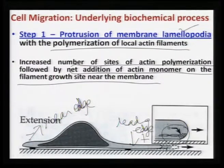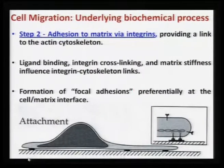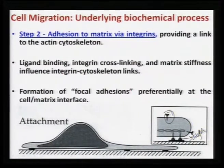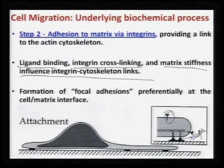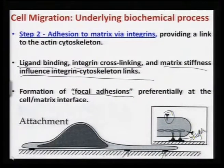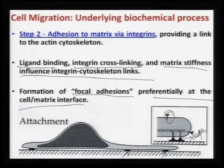For a cell, this side is considered the minus end and this is the leading edge, while the other side is the rear edge. Step 2 is adhesion to the matrix via integrins. Integrin proteins are a particular type of cell surface receptor. They directly interact with the actin filaments, providing a link to the actin cytoskeleton. Ligand binding, integrin cross-linking, and matrix stiffness all influence the integrin-cytoskeleton links.